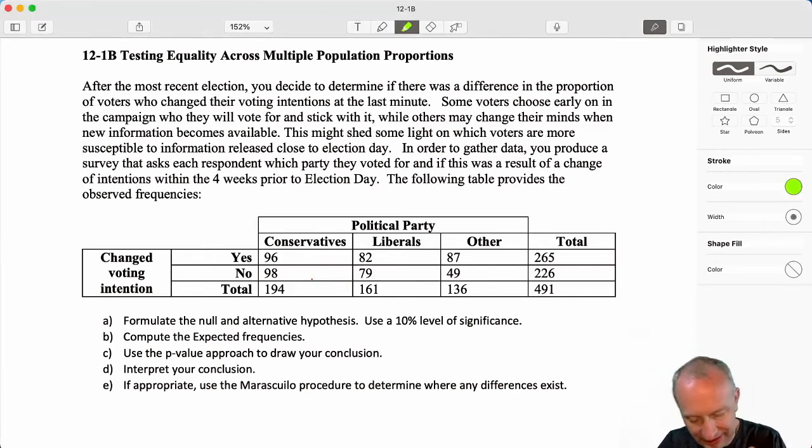So what we can see here is that I surveyed 194 people who voted for the conservative party. 96 of them changed who they were going to vote for in the four weeks prior. So maybe before that they were going to vote for liberals or somebody else but within four weeks up to the election they changed and decided to vote conservative. 98 of those people, they were always going to vote conservative. They did not change their mind. And then same kind of thinking for the 161 liberals and the 136 who voted for other.